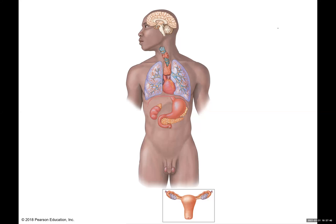Hello, anatomists. Michelle Glass here, and our job for today is to continue the study of the endocrine system by looking at models. To begin, we're going to see there are three glands in the brain. We're going to look at this overview to start, and then we'll look at some specifics.